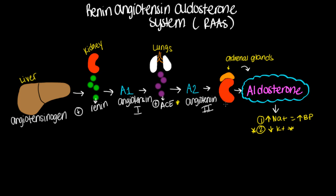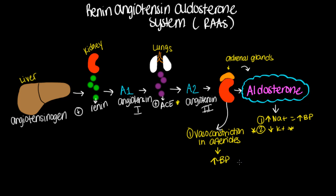Remember, angiotensin II also works at the level of the kidneys. It's actually going to cause vasoconstriction in the arterioles. Vasoconstriction in the arterioles is going to increase blood pressure — we know that the more narrow our vessels become, the higher the blood pressure is going to be. So this is our two-fold way: vasoconstriction in the arterioles increases blood pressure, and increased reabsorption of sodium also increases blood pressure.